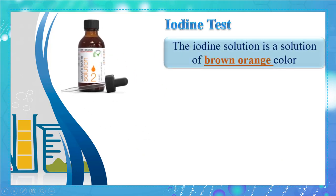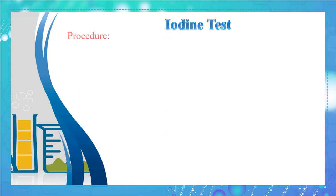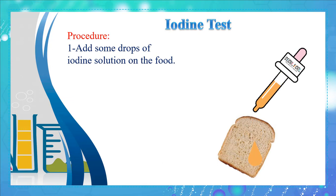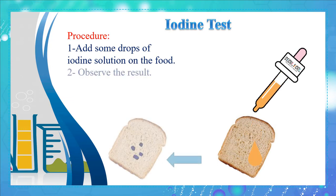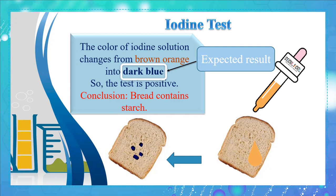We will start with the iodine test. The iodine solution is a brown-orange color. The type of food identified in this test is starch. Procedure: add some drops of iodine solution on the food and observe the result. The color changes from brown-orange into dark blue. Dark blue is the expected result, so the test is positive and we conclude that bread contains starch.